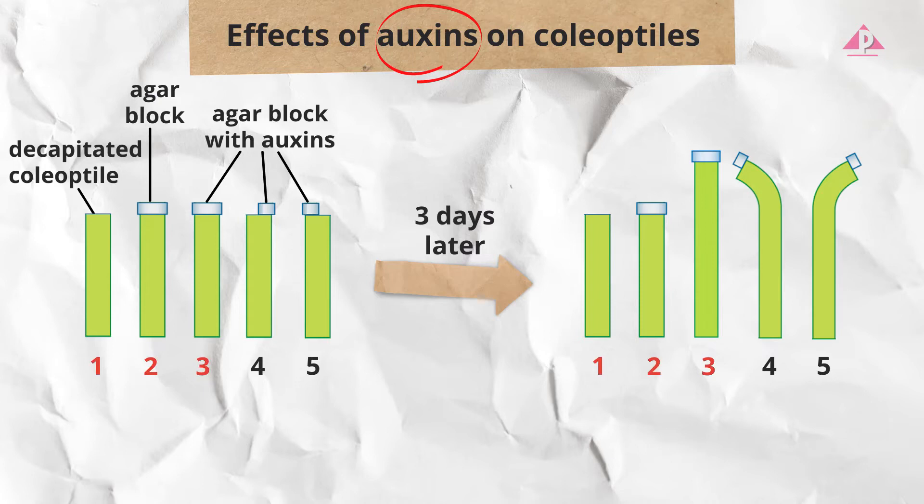Coleoptiles 1, 2 and 3 are used to investigate the effect of applying auxins on decapitated coleoptiles. While 3, 4 and 5 are used to investigate how uneven distribution of auxins affects the growth of the decapitated coleoptiles. Let's look at coleoptiles 1, 2 and 3 first.